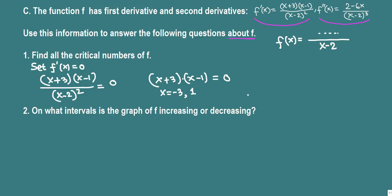Those are the two critical numbers. Now we check where the derivative is undefined — that's when x equals 2. However, 2 is not in the domain of the function since the function has x minus 2 in the denominator. So 2 cannot be a critical number. The only critical numbers are x equals negative 3 and x equals 1.